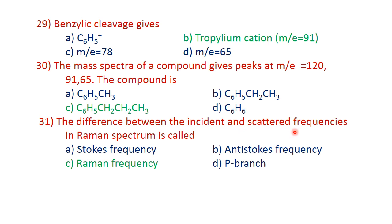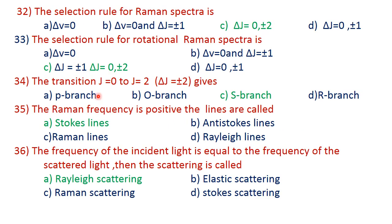Question 31: the difference between the incident and scattered frequency in Raman spectrum. The incident frequency minus the scattered frequency equals the Raman frequency: nu_Raman = nu_i − nu_s. C is the answer. Question 32: the selection rule for Raman spectra — repeatedly asked in examination — Δj = 0 or ±2 is the correct answer. For rotational Raman spectra, Δj = 0 or ±2; option C.